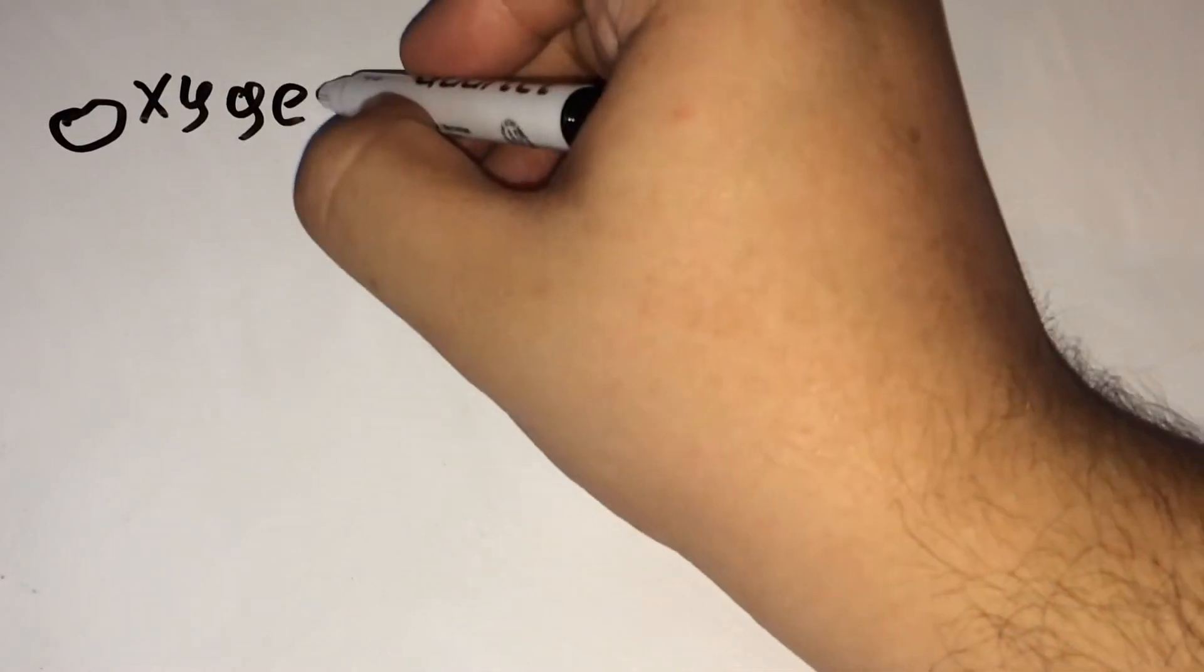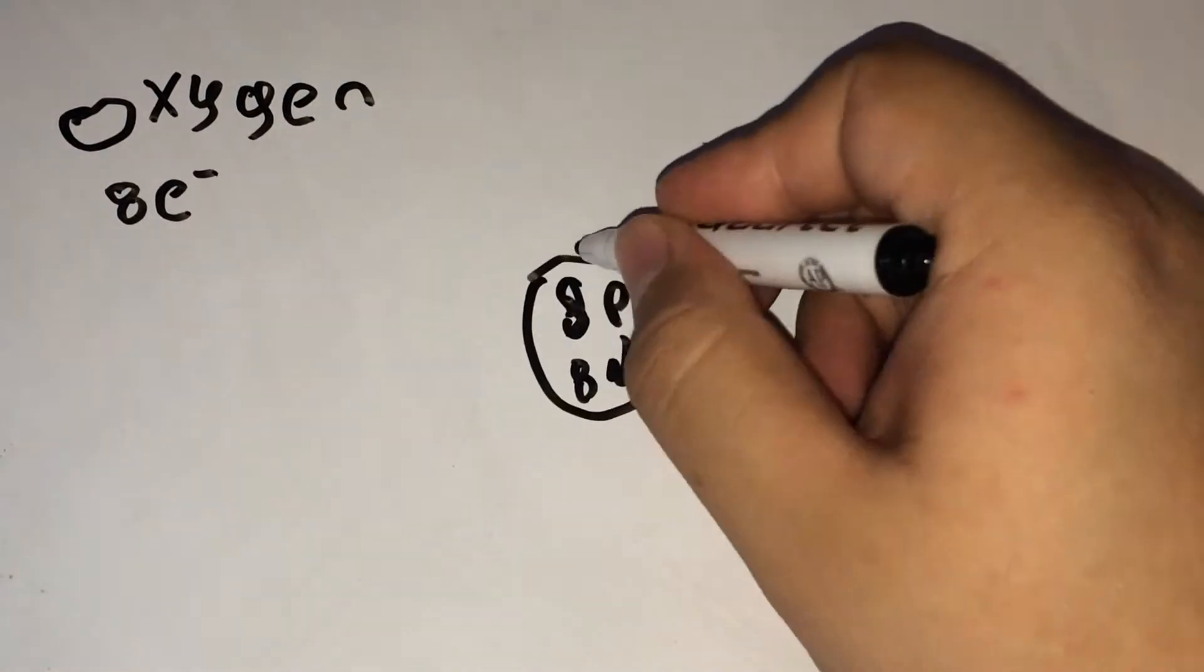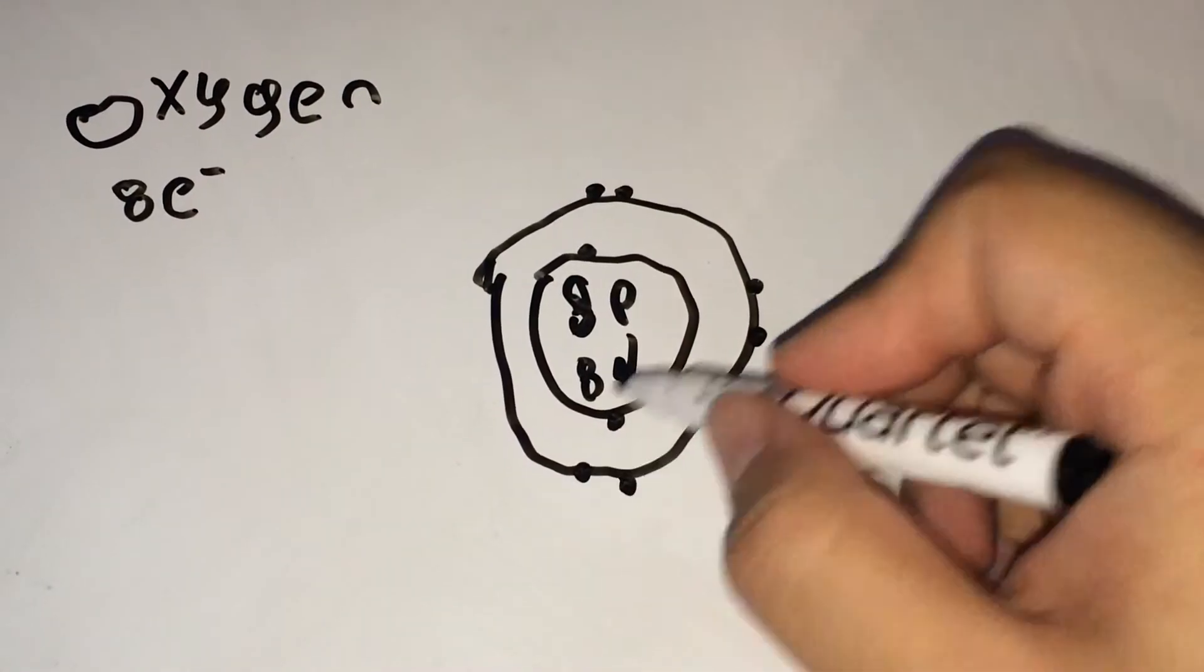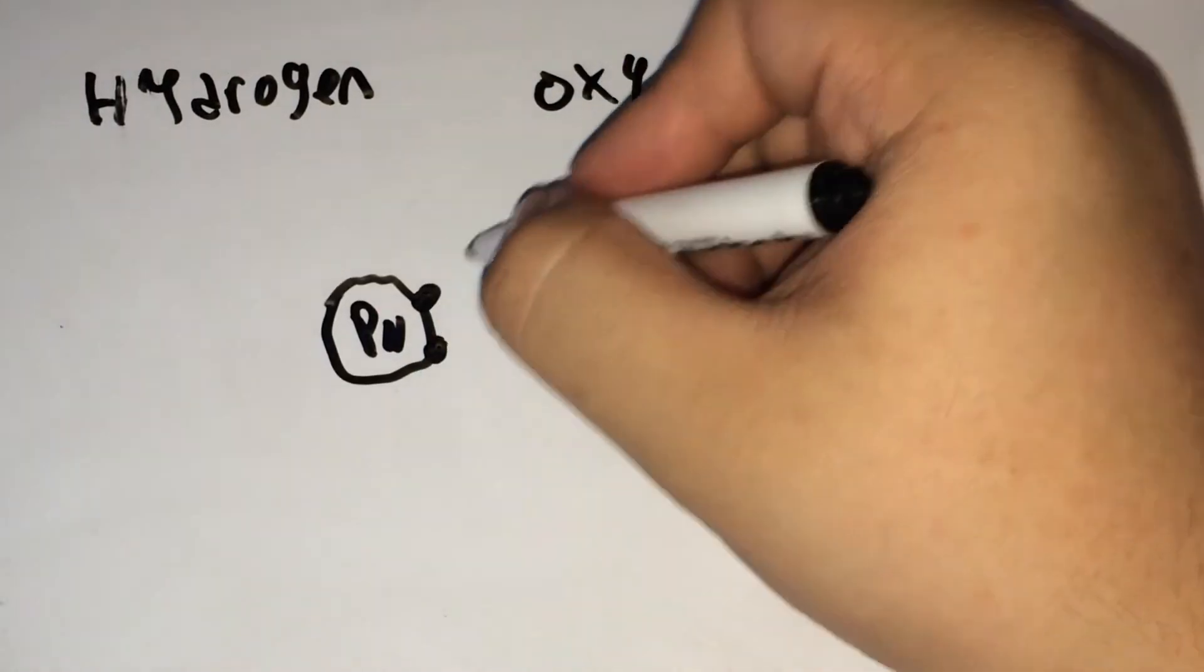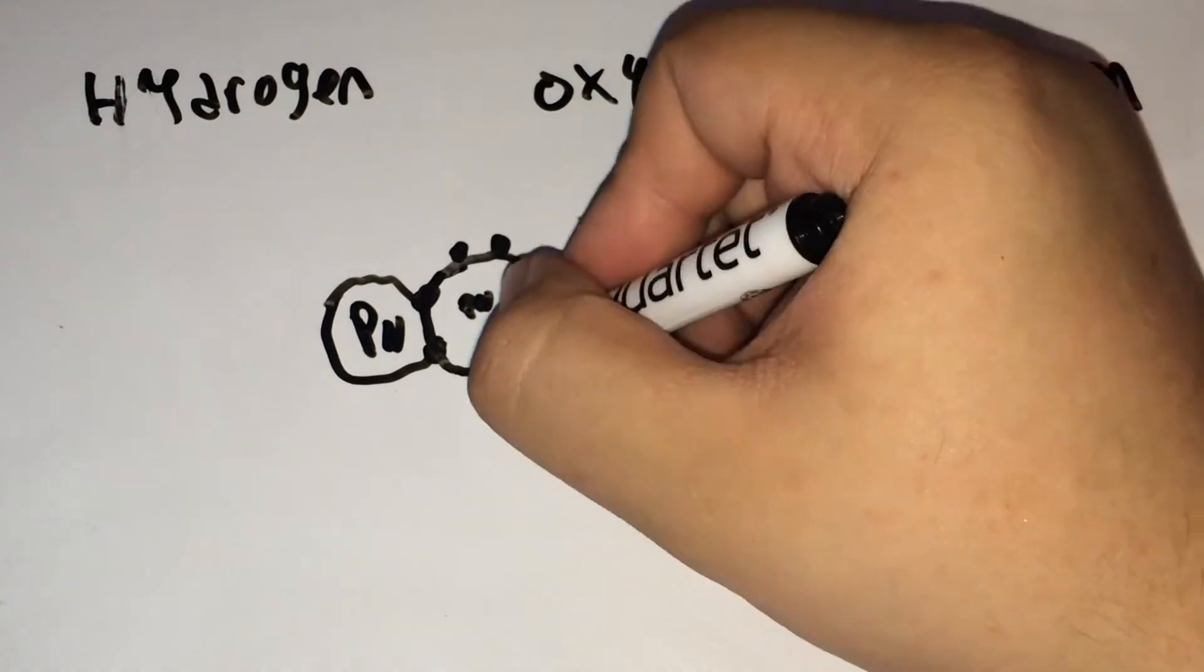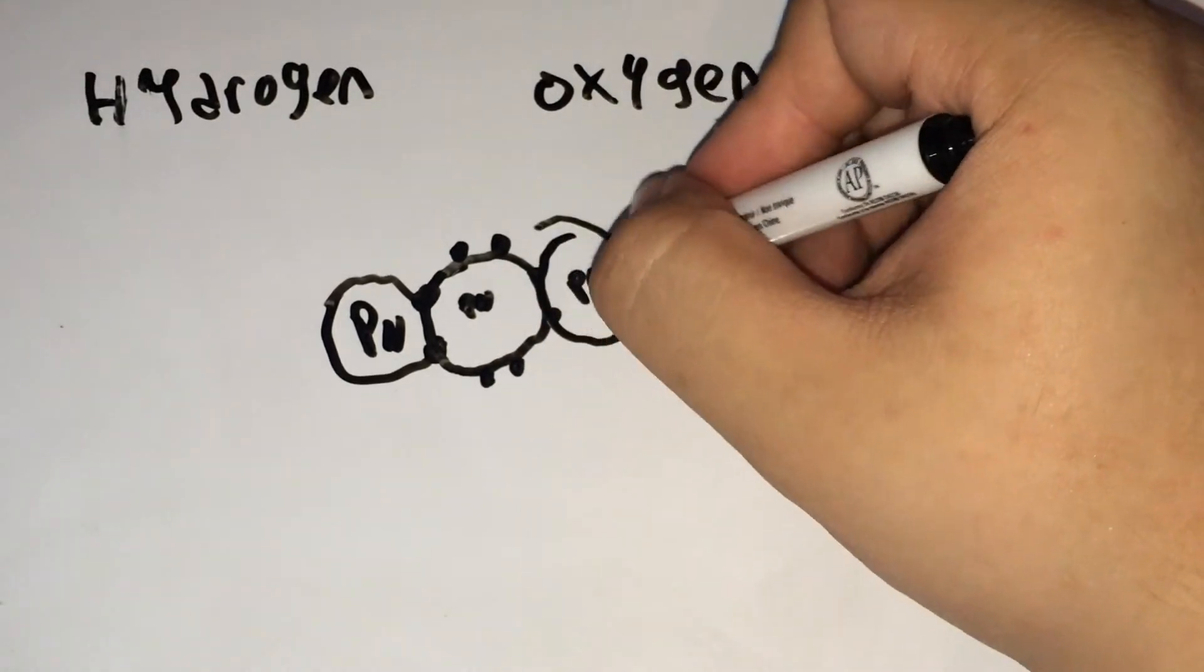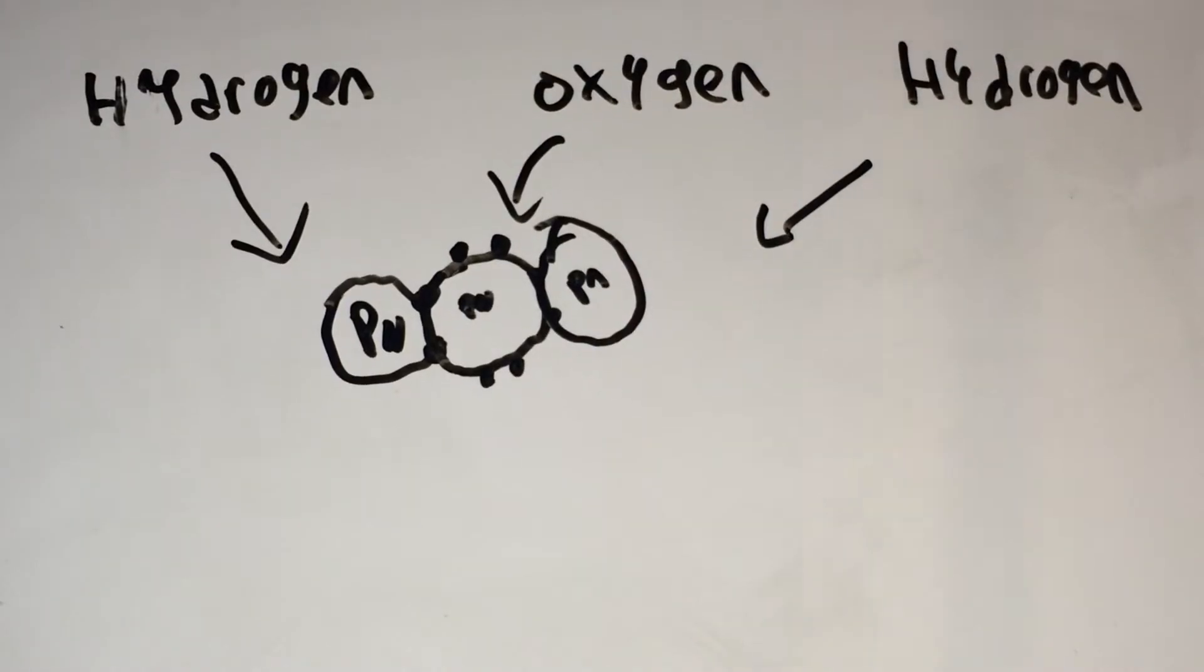In order to become stable, it can share an electron from another element. Let's use oxygen. It has eight electrons, so after drawing it out, we can see that it has six valence electrons. What we can do here is have these two elements share their electrons. So oxygen will use hydrogen's electrons, and hydrogen will use oxygen's electrons.